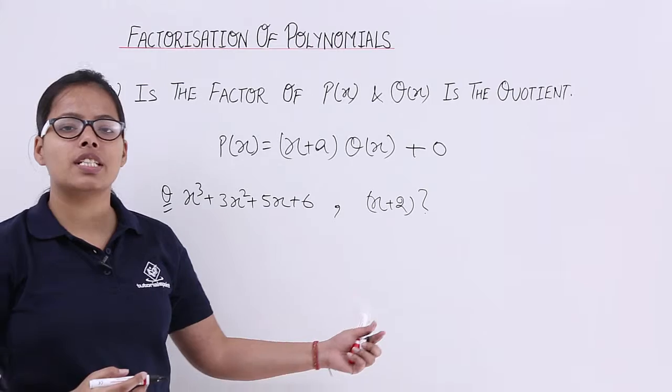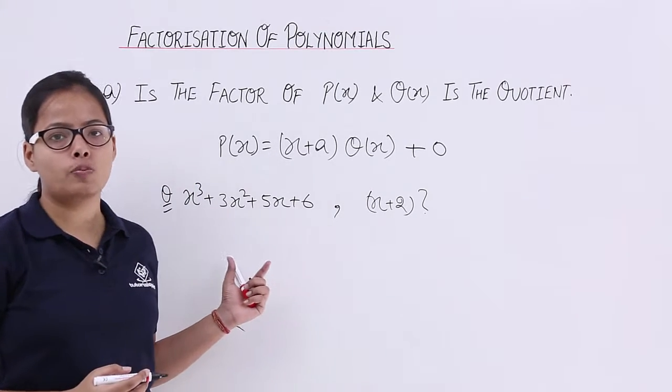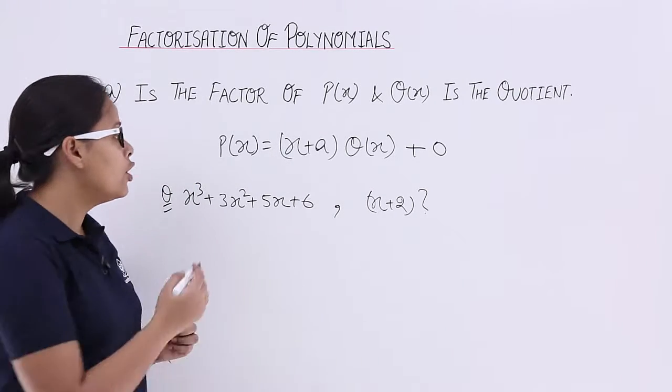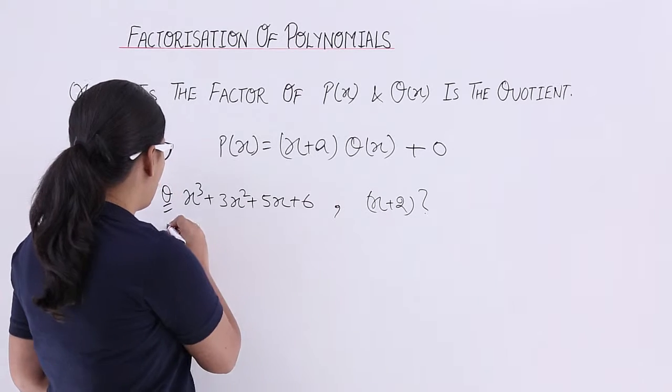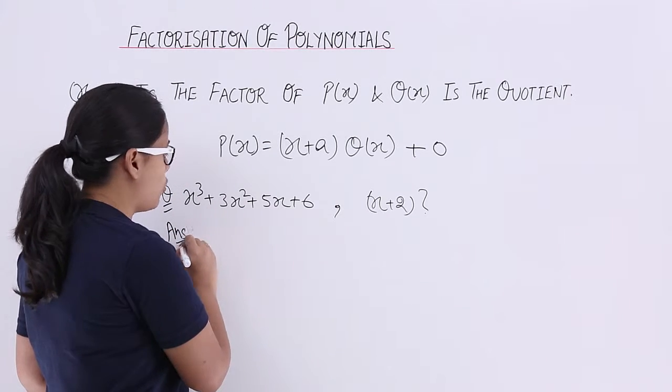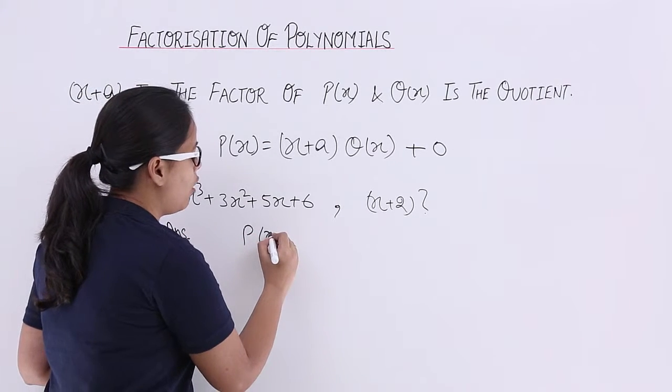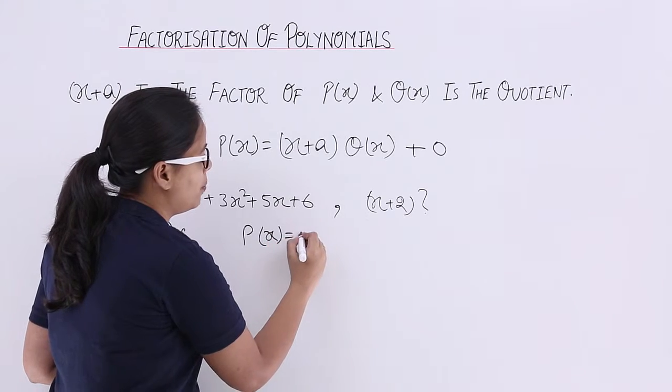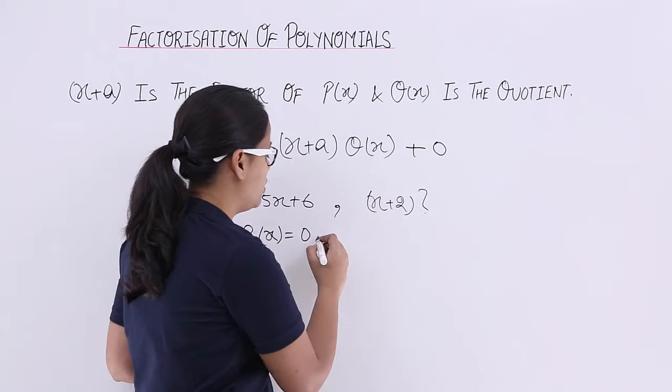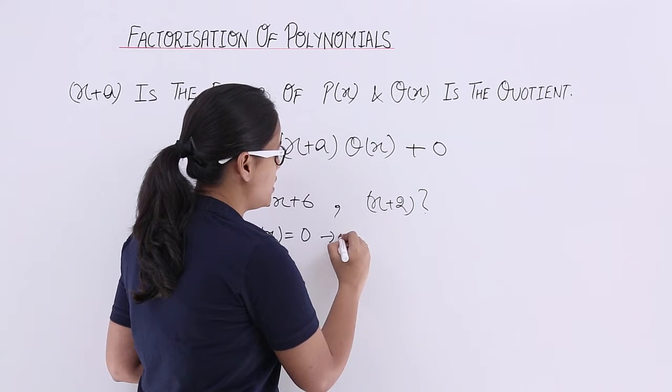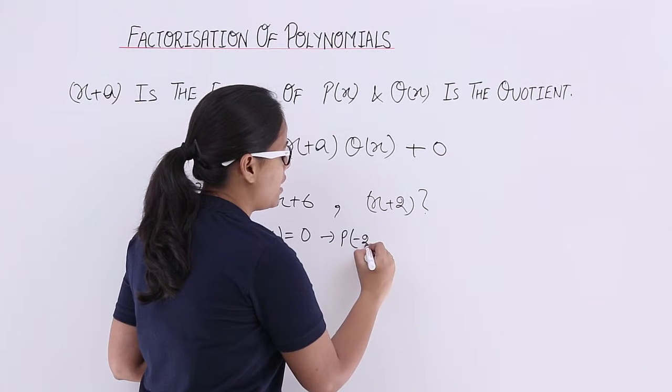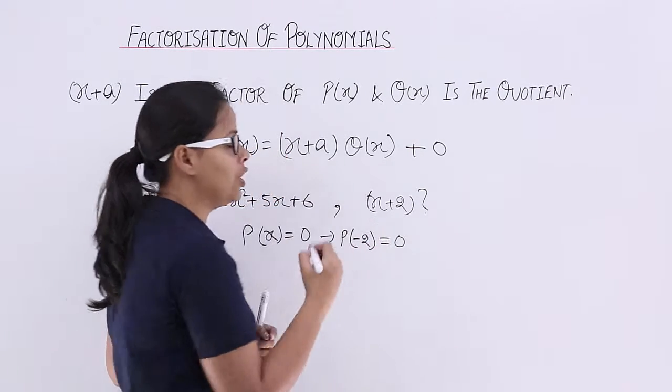You need to decide if this is the factor of this polynomial or not. To check on this, the condition you need to look for is P(x) should be equal to zero for this factor, and you can write this as P(-2) = 0.